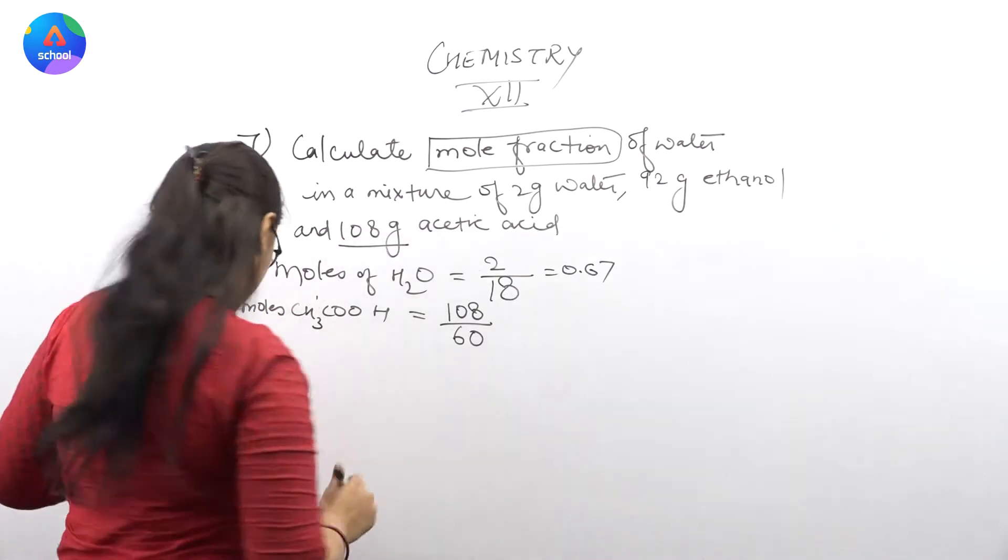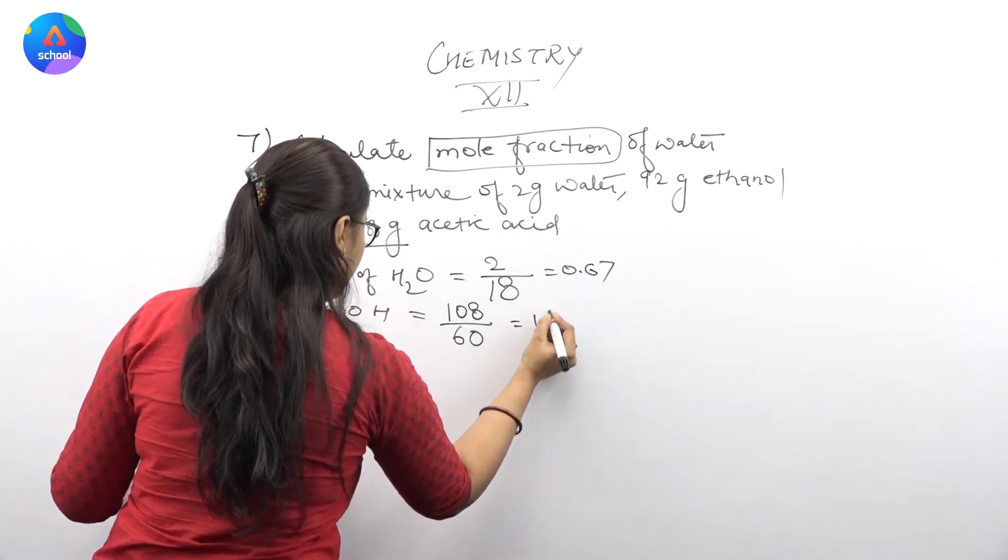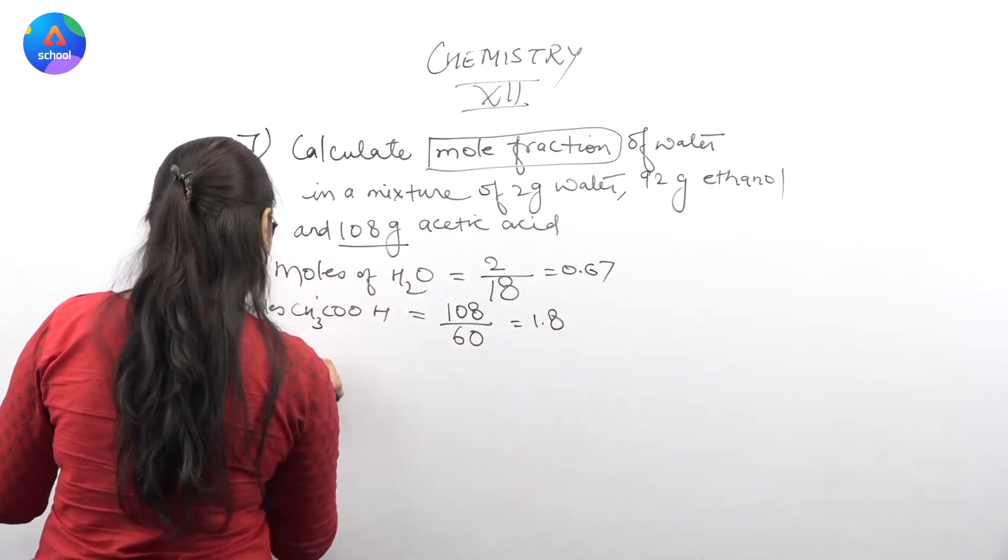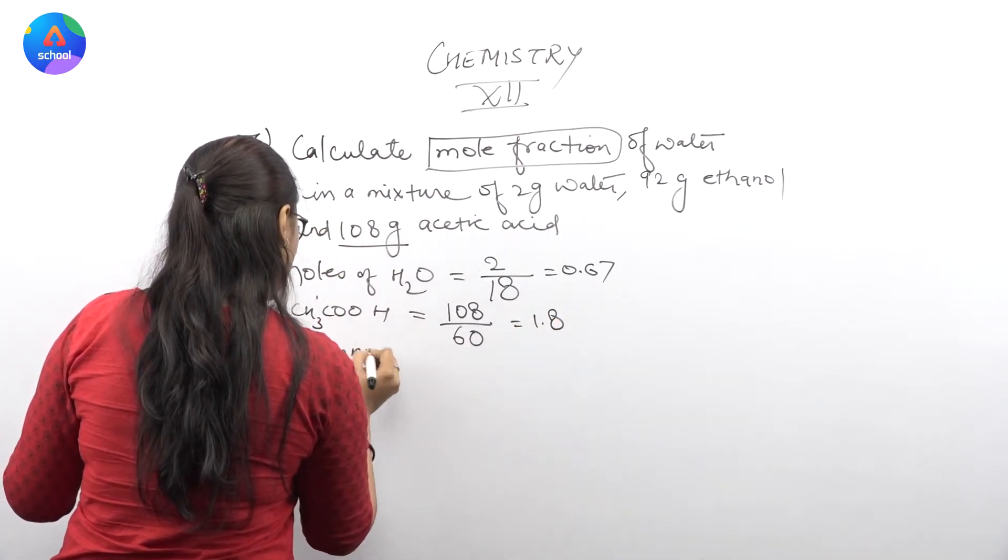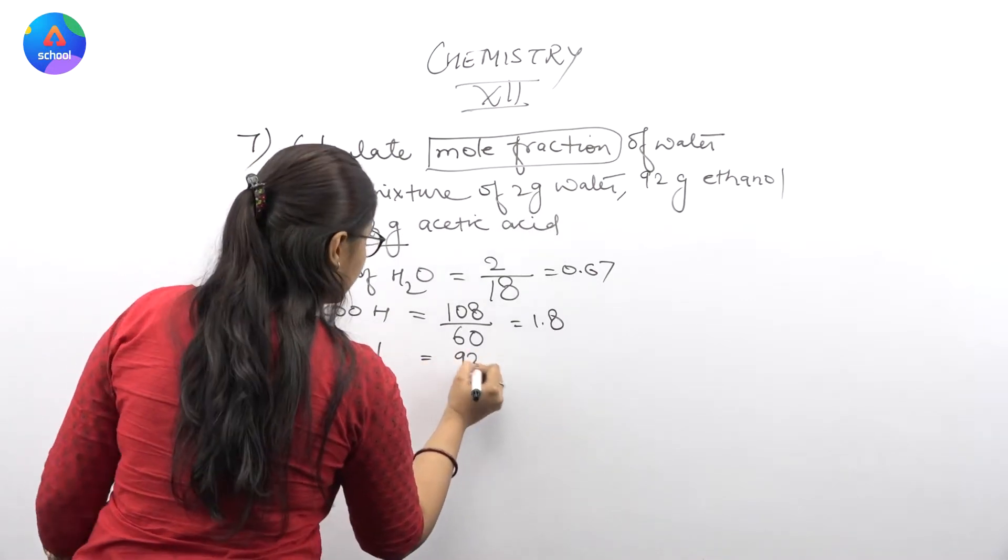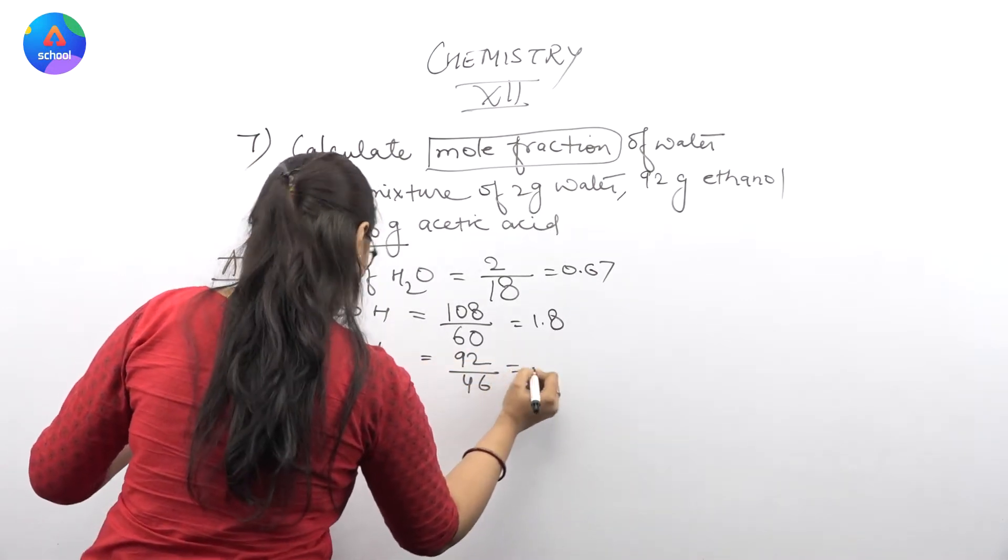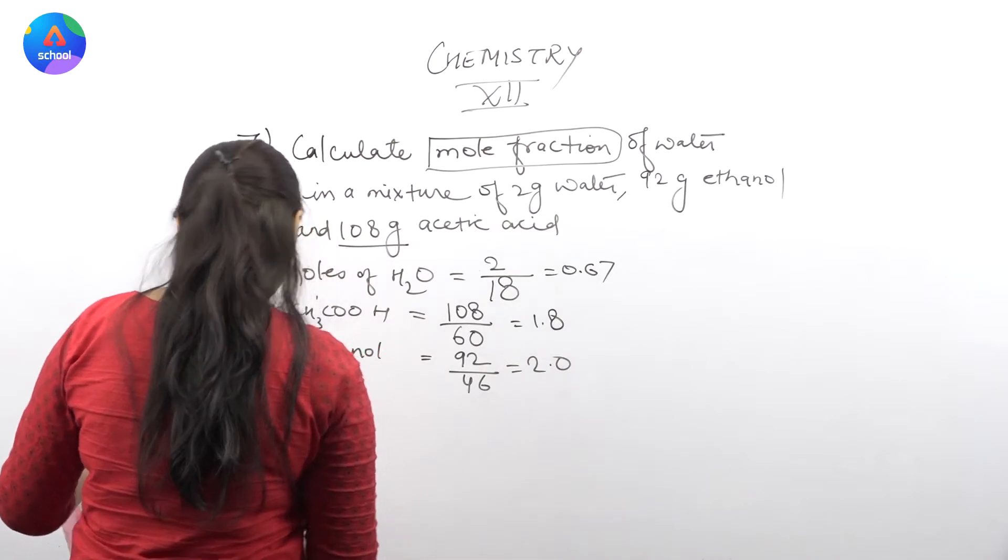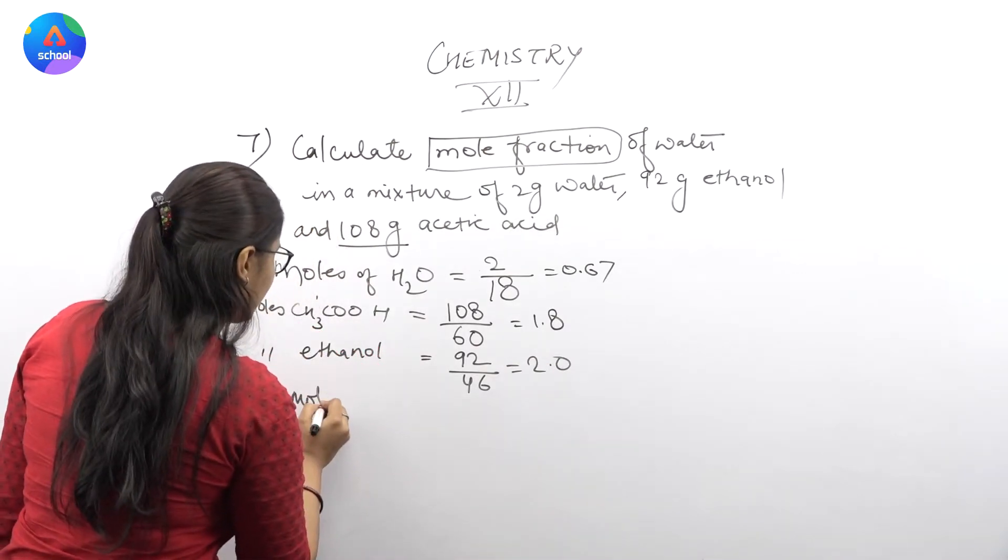And if we talk about moles of ethanol, then it comes out 92 by 46, which is 2. Okay, so if we talk about mole fraction of water...